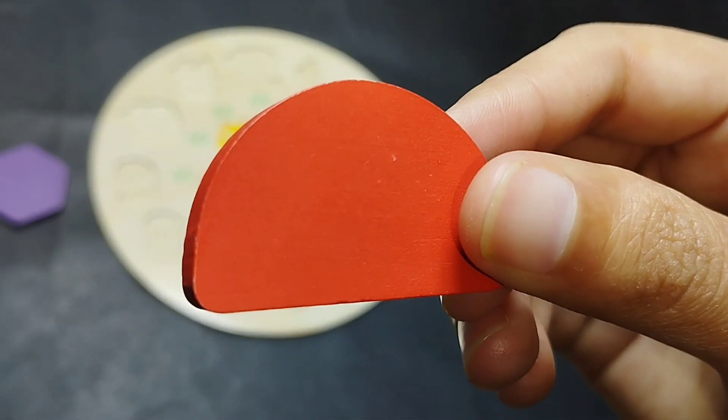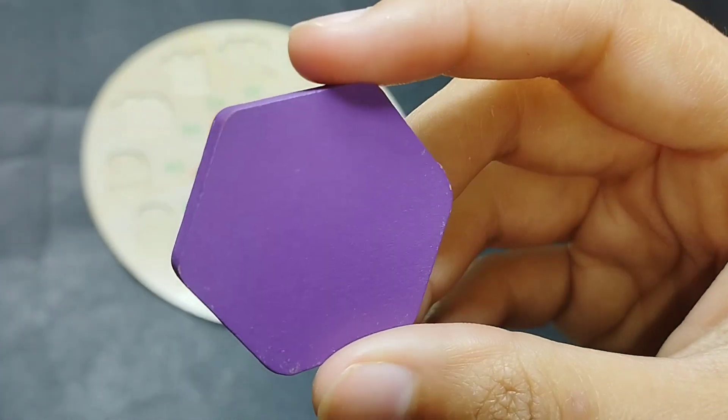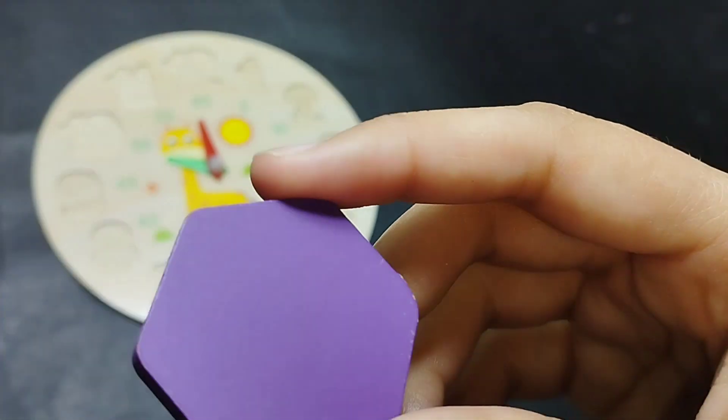This is half circle shape, half circle. This is hexagon, hexagon, hexagon.